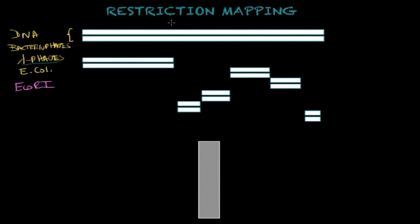E. coli has a restriction endonuclease called ECO-R1. ECO-R1 is going to meet with the DNA from the lambda phage, find specific palindromic sequences, and then cleave this DNA molecule and create these fragments out of this initial DNA molecule.